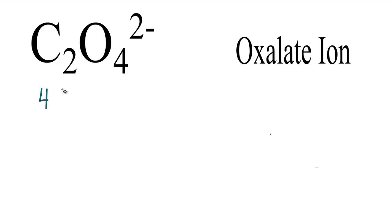Carbon has 4 valence electrons, and we have 2 carbons, plus oxygen has 6 valence electrons. We have 4 oxygens. And don't forget the 2- up there. That's 2 additional electrons, so we need to add 2 to this number. So, 8 plus 24, that's 32, plus 2, that equals 34. So we have a total of 34 valence electrons for the C2O4 2- Lewis structure.